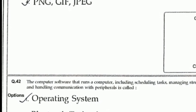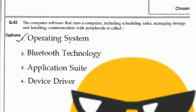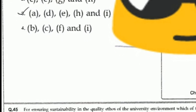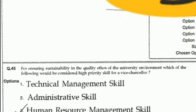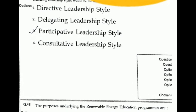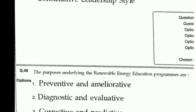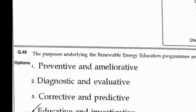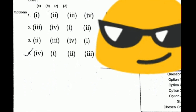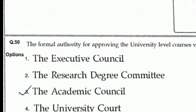Question 41's right answer is PNG, GIF, JP. Question 42's right answer is operating system. Question 44's right answer is option 3. Question 45's right answer is human resource management skill. For promoting human rights, the answer will be to practice participative leadership style. Question 48's right answer is option 4: educative and investigative. Set 1, set 2: right answer is 4, 4, 1, 2, 3. Question 50's right answer is option one.